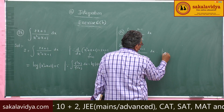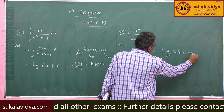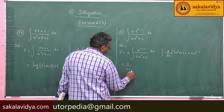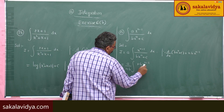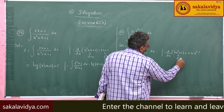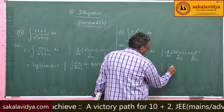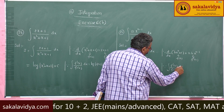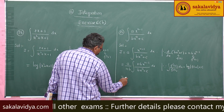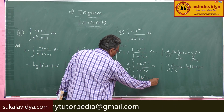Let us differentiate the denominator: d/dx of (b·xⁿ + c) = n·b·xⁿ⁻¹. Now multiply and divide by nb: this becomes (A/nb) times integral of (n·b·xⁿ⁻¹) / (b·xⁿ + c) dx. The denominator is f(x) and the numerator is f'(x), so this is in the form integral f'(x)/f(x) dx = log|f(x)| + C. Therefore the answer is (A/nb) · log|b·xⁿ + c| + C.